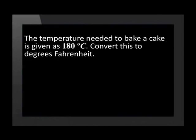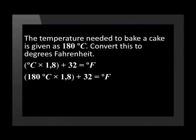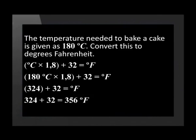The temperature needed to bake a cake is given as 180 degrees Celsius. Convert this to degrees Fahrenheit. To answer this question, we have to substitute the degrees Celsius symbol with the degrees given in the question. This gives us 180 degrees Celsius multiplied by 1,8 plus 32 equals the value in degrees Fahrenheit. The answer to the bracket is 324, but we still have to add 32 to find the final answer. The final answer is 356 degrees Fahrenheit.